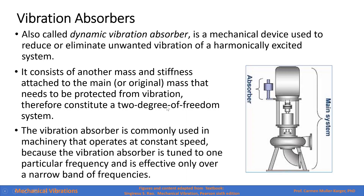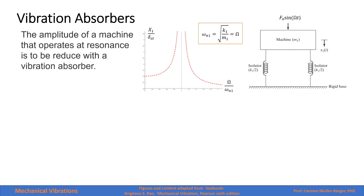The vibration absorber is commonly used in machinery that operates at a constant speed, because the vibration absorber is tuned to one particular frequency and is effective only over a narrow band of frequencies. The amplitude of a machine that operates at resonance is to be reduced with a vibration absorber.